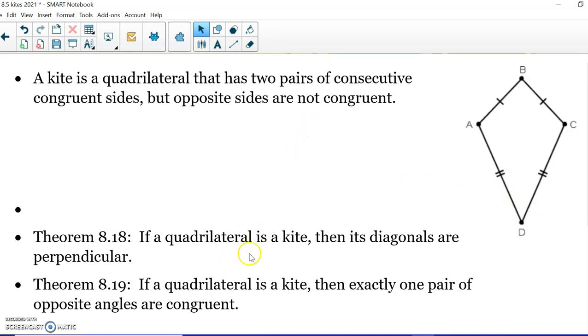All right, so it says in a kite the diagonals are perpendicular, so let's draw those in. There we go. So the diagonals are perpendicular. Why do we care about that? Now we can use Pythagorean theorem. We can use trig.